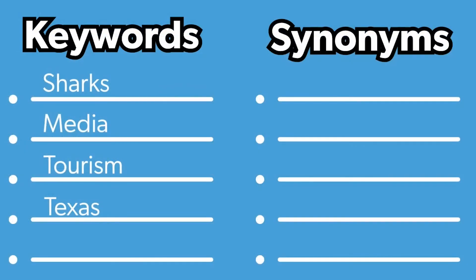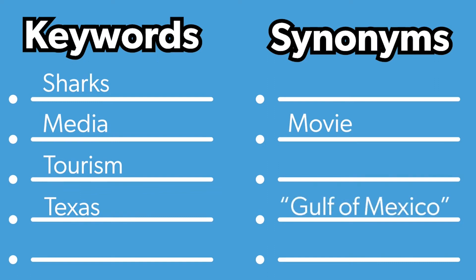We also should be prepared with backup terms before entering a search. When explaining the most recent shark movie, Sam and I may use different words to explain it to a friend. Similarly, those who create content may use different terminology than what you're originally searching for. Brainstorming synonyms for some of these keywords can help you prepare to refine your search. For example, instead of using the word media, what if Sam uses the word movie? Maybe the movie The Meg or Jaws has had an influence on tourism. Maybe Sam would also want to add the keyphrase Gulf of Mexico to their search.